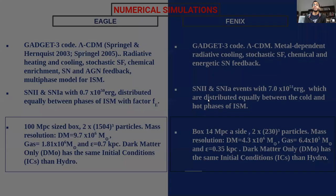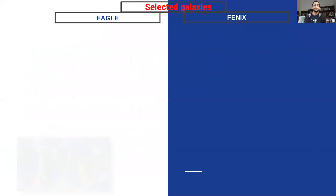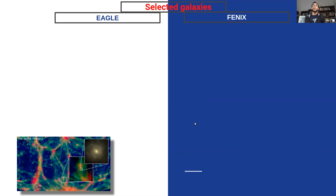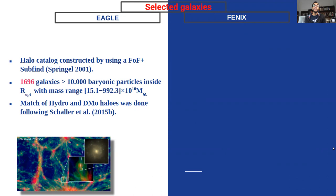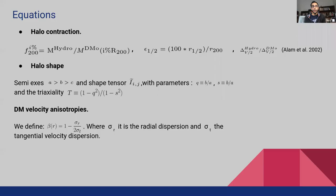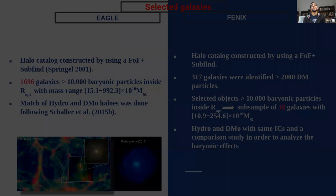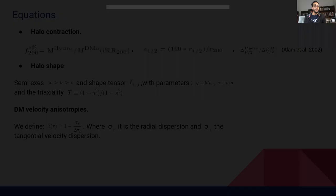We compare both runs with their dark matter only counterpart. We are selecting objects resolved with more than 10,000 baryonic particles within their optical radius. For Eagle, this yields 1,700 galaxies and for Phoenix, a subsample of 38 galaxies. Each object has a corresponding dark matter only counterpart in order to perform a comparative study of baryonic effects.